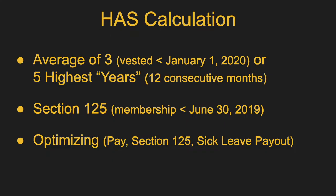So how is your Highest Average Salary, your HAS, calculated? It depends a little bit on when you joined PERA — specifically when you were vested. If you had five years before January 1st, 2020, then your HAS is based on the average of your three highest years. If you did not vest before that, it's your five highest years. Technically they're not years but 12 consecutive months. PERA looks at every 12 consecutive month period in your entire work history and picks the three or five highest. It does not have to be your last three or five years, although for most folks it is.